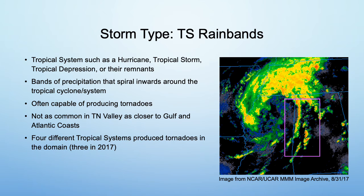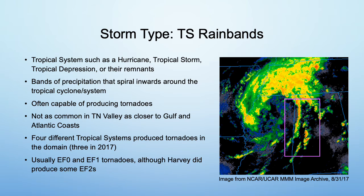Four different tropical systems produced tornadoes in the domain: Lee in 2011 and Cindy, Harvey, and Nate in 2017. Later on I'll actually have to add Laura from this year. TS rain band tornadoes are usually weak, EF0 or EF1, but Harvey did produce some EF2s.